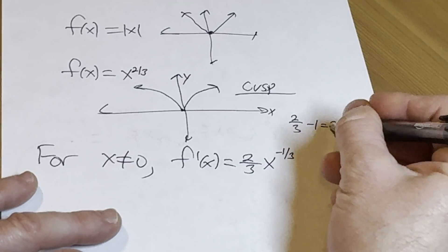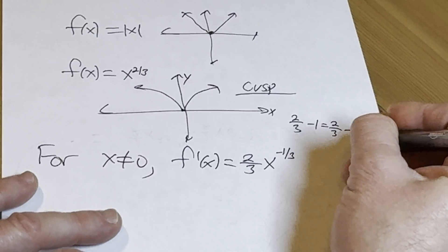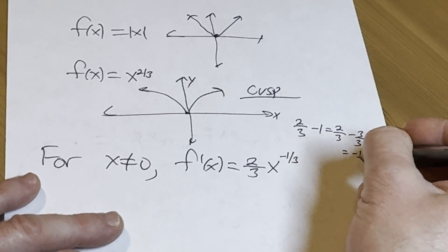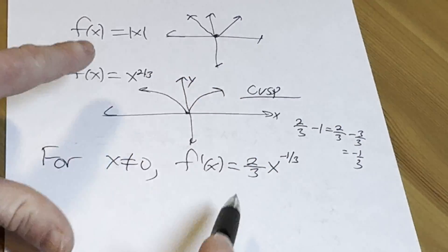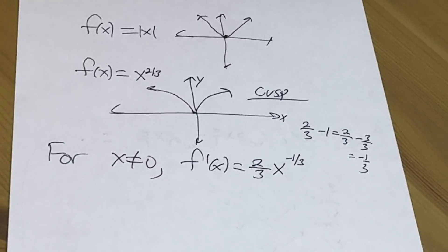Because it'll be two thirds minus one, which is two thirds minus three thirds. Two minus three is negative one. And then you bring that number, and you put it down in the front, right? You subtract one. It's the power rule from calculus.